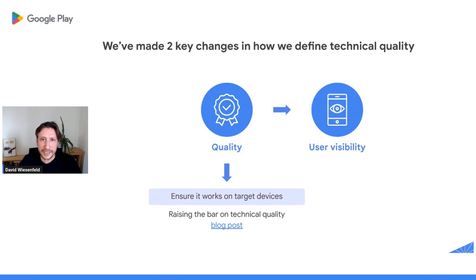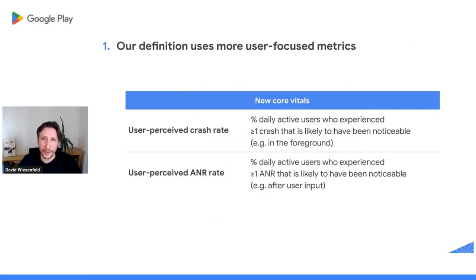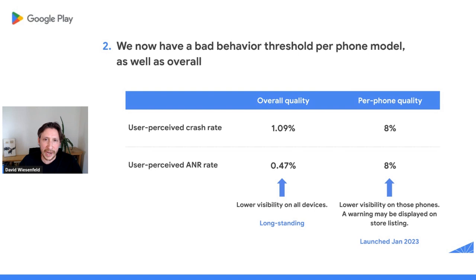We've recently made two important changes to how we define technical quality. You can read more about this in the blog post from November 2022, which you can find in the link section of the webinar page. First, we are now looking at more user-focused metrics. Previously, Android Vitals had a crash rate and ANR rate based on all the crashes and ANRs that your app experienced. Now, we're creating new user-perceived crash and ANR rates that measure only those crashes and ANRs that were perceived by the user. That is, we're no longer counting things like background ANRs that may happen during middle-of-the-night housekeeping operations when you plug a phone into the charger. We've kept the bad behavior thresholds for crash and ANR rate the same — we are now only looking at the user-perceived crash and ANR events. Because user-perceived crashes and ANRs are a subset of all of your crashes and ANRs, your rates will have gone down. Being on the wrong side of the bad behavior threshold still has the same effect, making your app or game less discoverable on the Play Store.